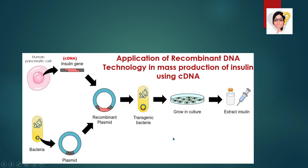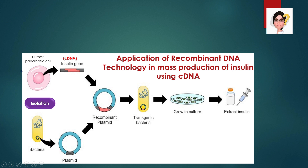The first step is isolation. In isolation, plasmid will be isolated from the bacteria, and then the target gene containing the insulin gene will be isolated from the human pancreatic cell. But this process does not occur directly because it involves the production of cDNA.